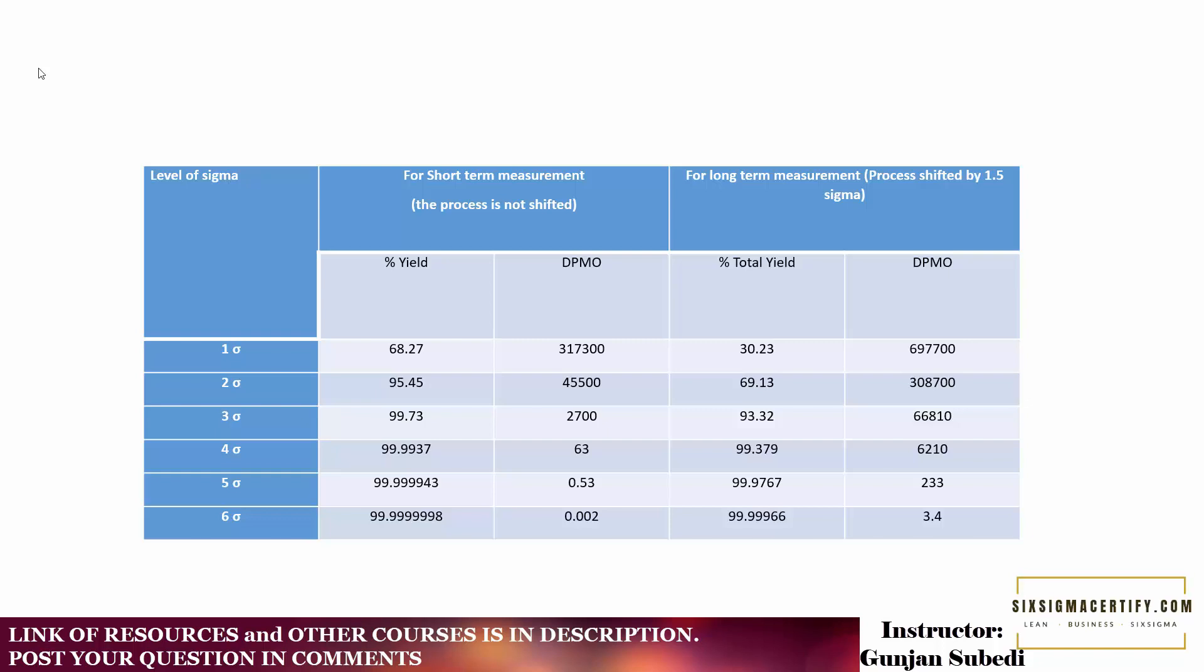So in the Six Sigma level, you can still get the higher yield, which is 99.99966 or say 99.9997 percent total yield for the long term measurement. So this is the relation between the DPMO and the percentage yield.